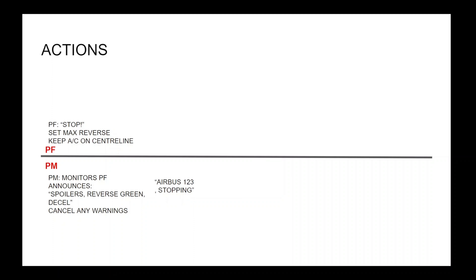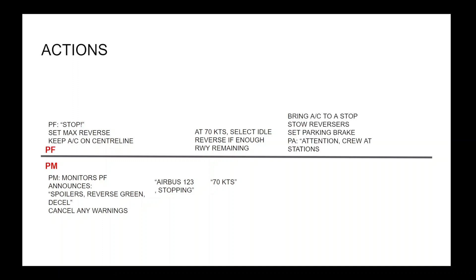At 70 knots the PM calls this, and if there is enough runway remaining, the PF will select idle reverse. The PF will then bring the aircraft to a stop, stow the reversers, set the parking brake, and make the PA: 'Attention, crew at stations.' The PM will locate the emergency evacuation checklist and keep it on standby — this can save crucial time later on — and then when ready, start on the ECAM.